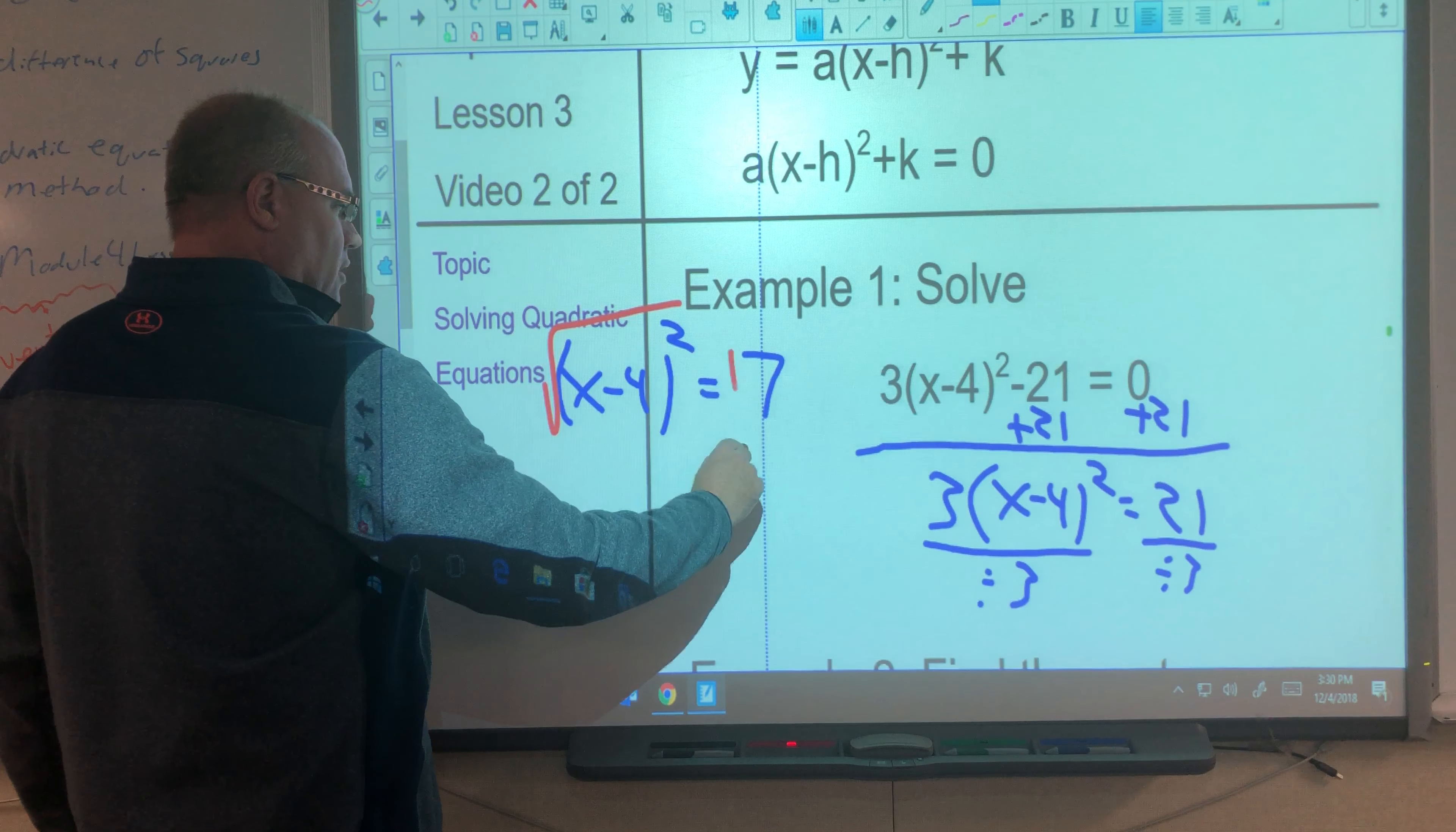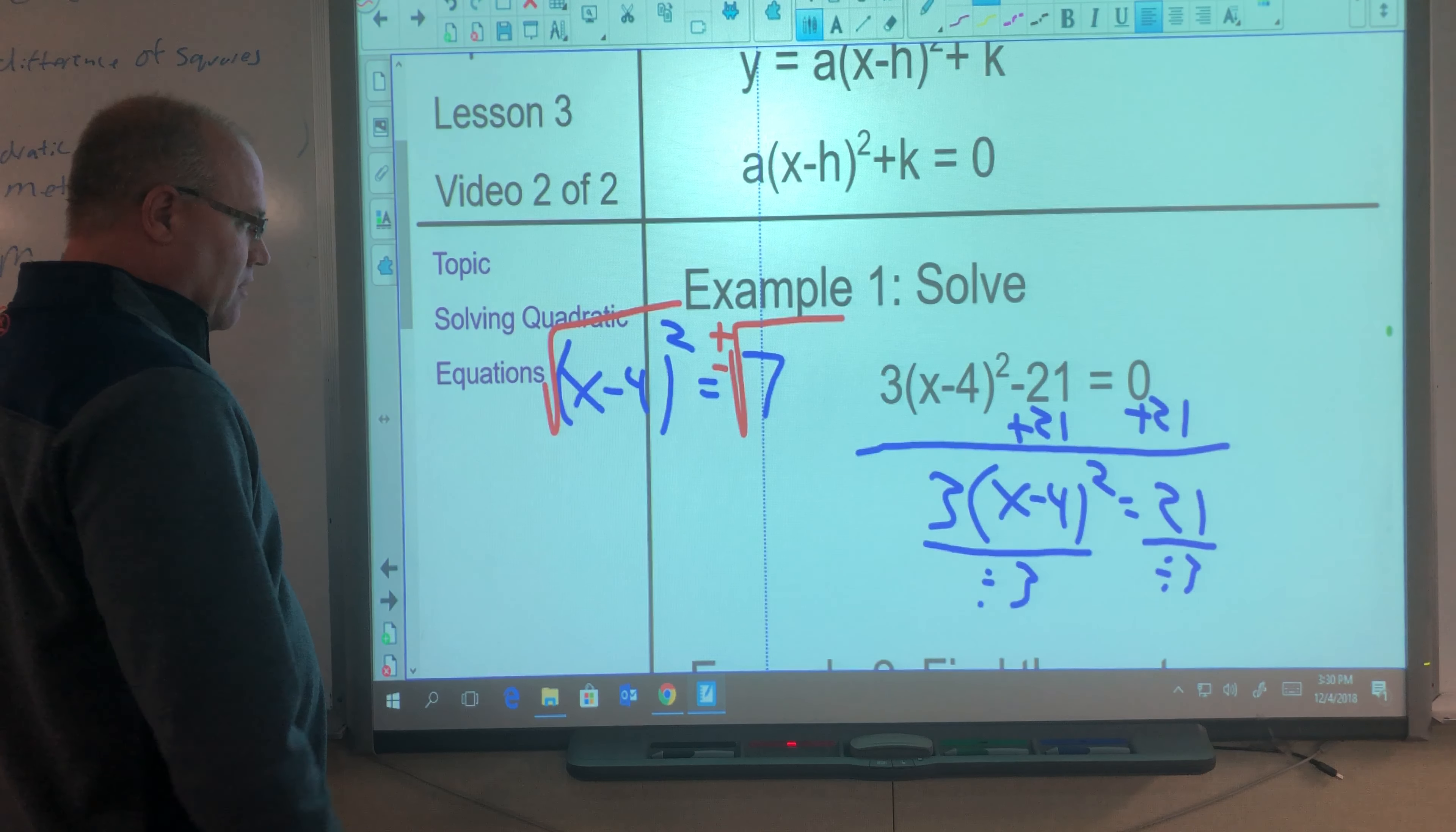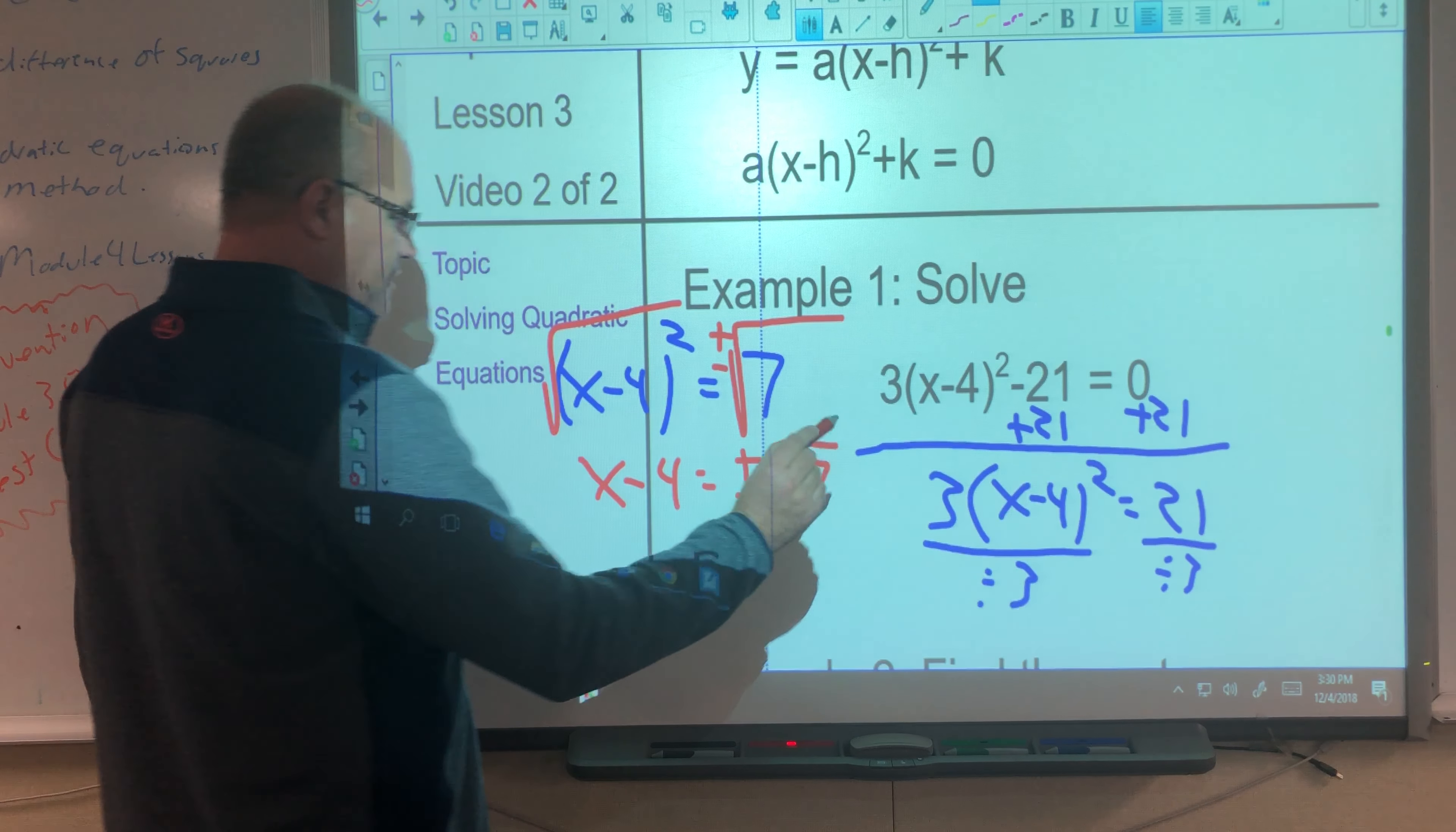Square root, square root, and when we do that we know we're going to take the positive and the negative root. So then I get x minus 4 equals plus minus the square root of 7.